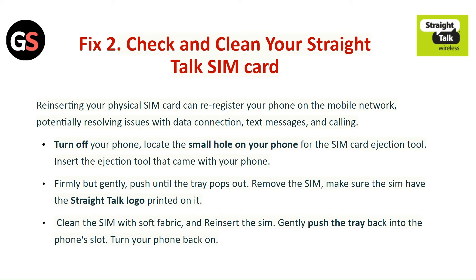Turn off your phone. Locate the small hole on your phone for the SIM card ejection tool. Insert the ejection tool that came with your phone and firmly but gently push until the tray pops out. Remove the SIM and make sure it has the Straight Talk logo printed on it. Clean the SIM with a soft fabric and reinsert it. Gently push the tray back into the phone's slot, then turn your phone back on.